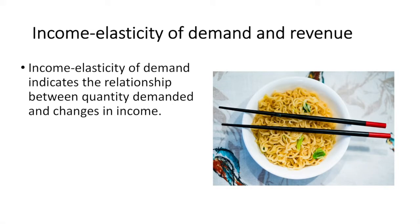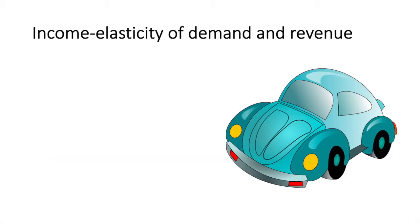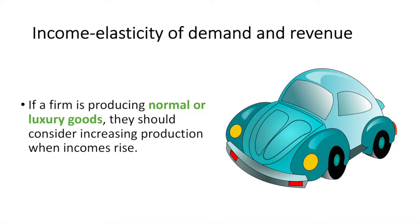In the case of income elasticity of demand, a firm can use estimates to determine how the demand for their product will change with respect to changes in income. If they produce inferior goods, such as instant noodles, then they should consider increasing production when incomes fall. If a firm is producing normal or luxury goods, they should consider increasing production when incomes rise.